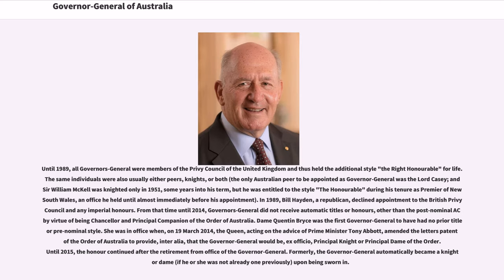Until 1989, all Governors-General were members of the Privy Council of the United Kingdom and thus held the additional style The Right Honourable for life. The same individuals were also usually either Peers, Knights, or both. The only Australian Peer to be appointed as Governor-General was Lord Casey, and Sir William McKell was knighted only in 1951, some years into his term. In 1989, Bill Hayden, a Republican, declined appointment to the British Privy Council and any Imperial Honours.